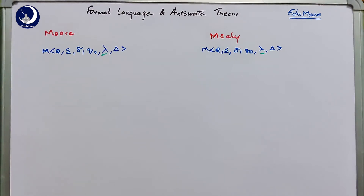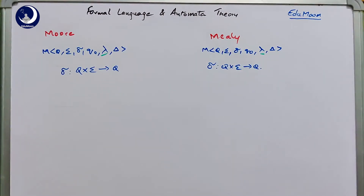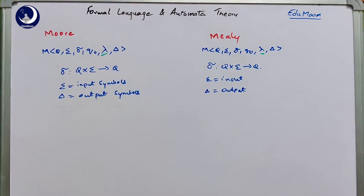Where Q is the set of states, sigma is the input symbols, and delta is the transition function giving the next state — same as Q cross sigma goes to Q in both cases. Lambda is the output function and small delta is the set of output symbols. In both cases, sigma denotes input symbols and delta denotes output symbols; the difference between both machines is the lambda function.